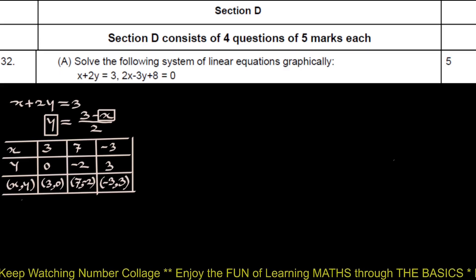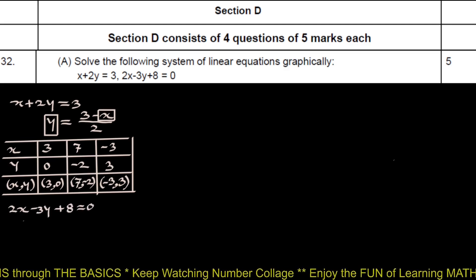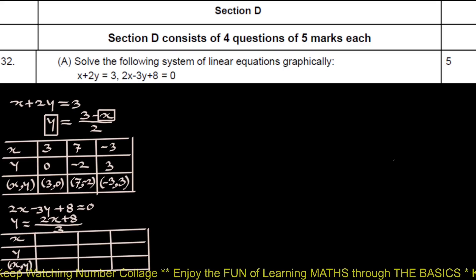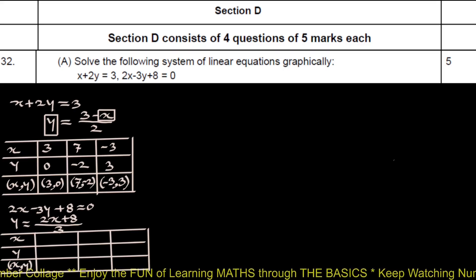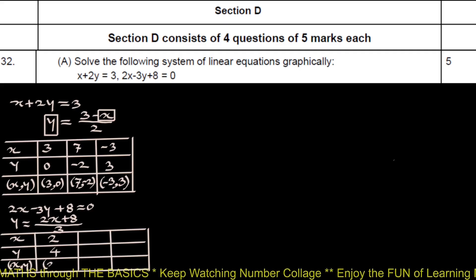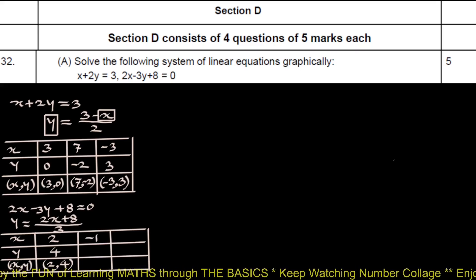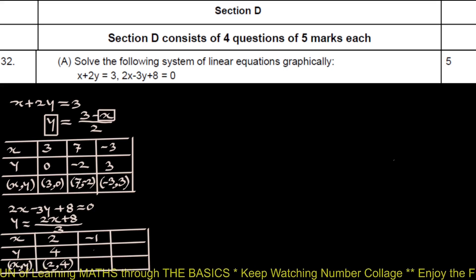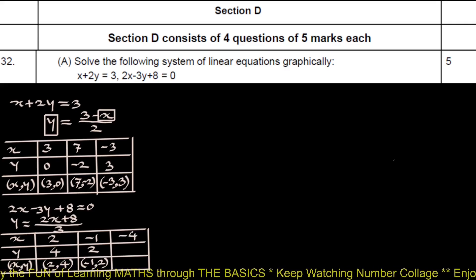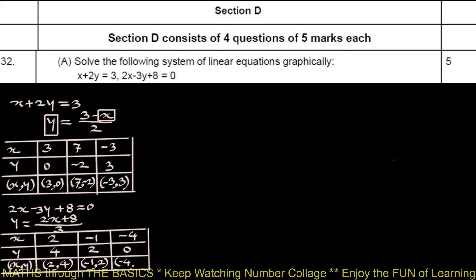Next, we prepare a table for the second linear equation: 2x minus 3y plus 8 equals 0, so y equals (2x + 8) upon 3. We choose x such that the numerator is divisible by 3. If x = 2, then (4+8)/3 = 4, giving point (2, 4). If x = -1, then (8-2)/3 = 2, giving point (-1, 2). If x = -4, then (-8+8)/3 = 0, giving point (-4, 0).